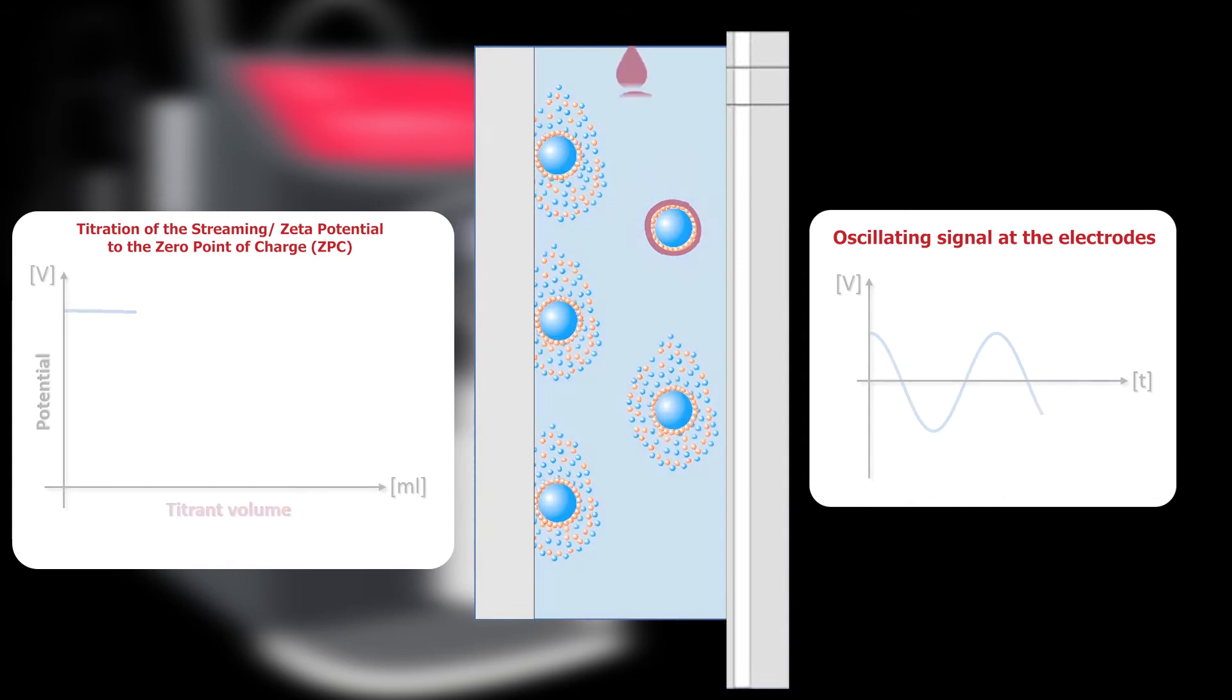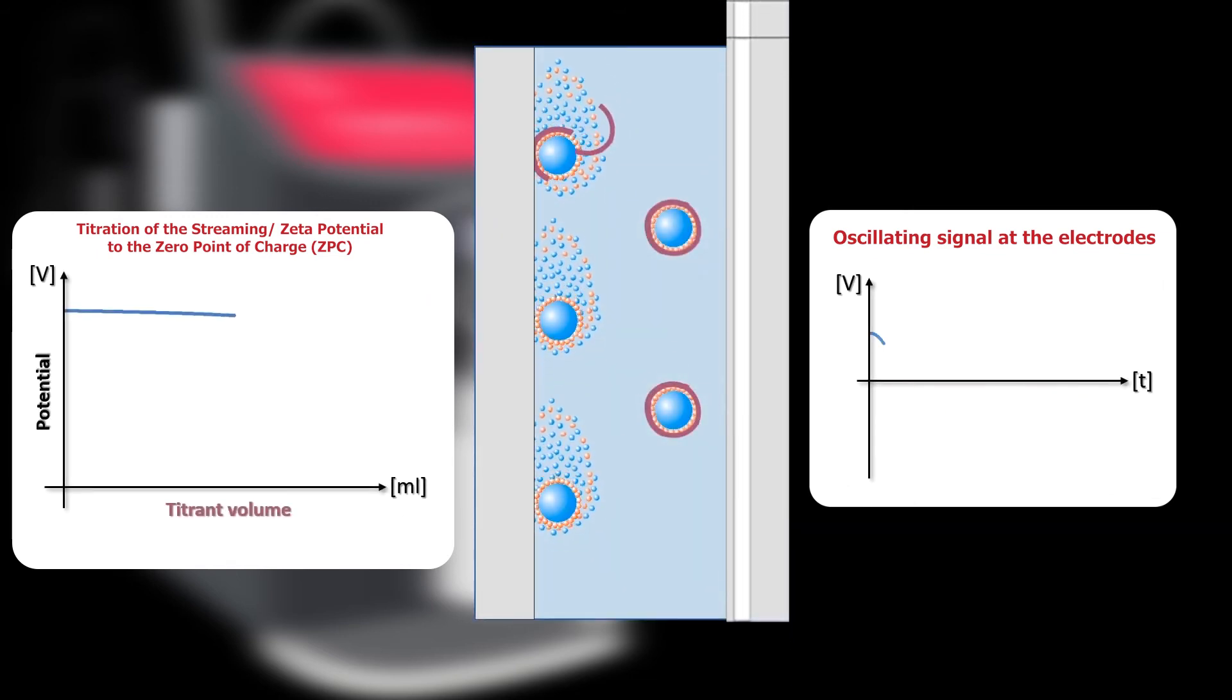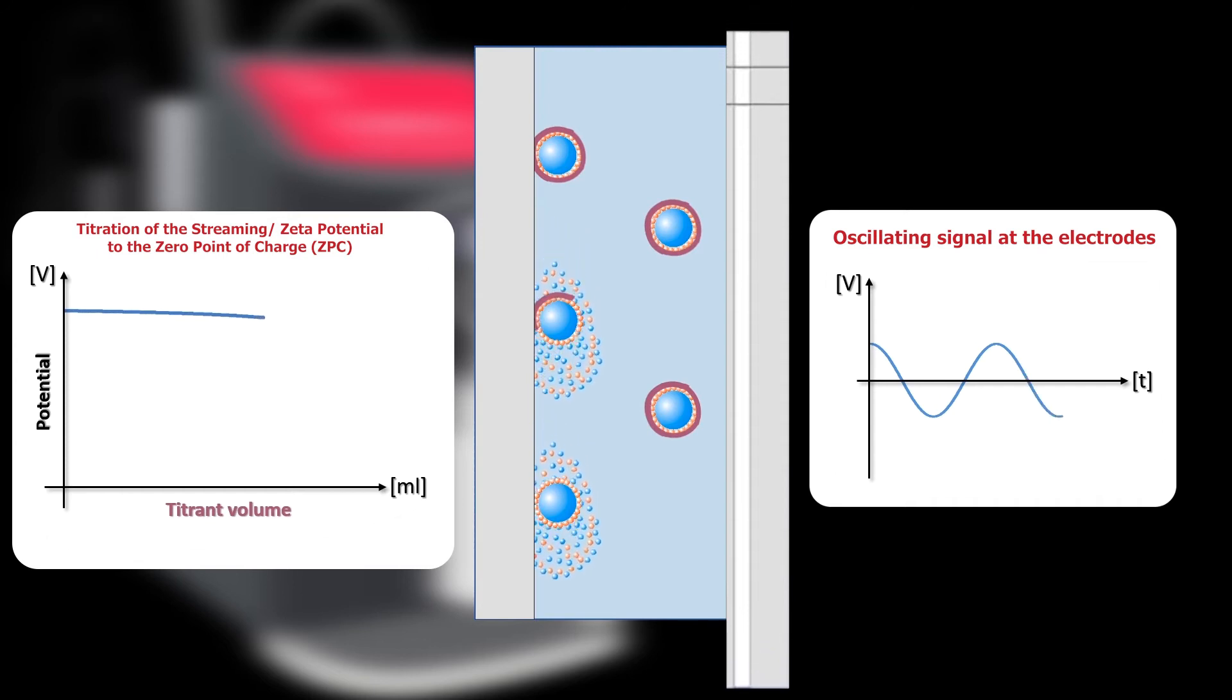To determine the true stability, we track changes in zeta potential against the volume of titrant added, thus allowing calculations such as isoelectric points when performing pH titrations. The Stabino is a unique zeta potential instrument for analyzing and optimizing the stability of colloids and dispersions. With unrivaled technical ability when it comes to measuring streaming potential, it's able to measure sample concentrations varying from 0.01% to 40% in volume.